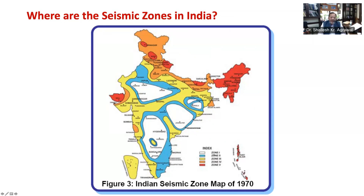If we need to relate them with the Modified Mercalli Intensity, the maximum MMI of seismic shaking expected in these zones is as follows: Zone 1 is five or less, Zone 2 is six, Zone 3 is seven, Zone 4 is eight, and Zone 5 will have a maximum Modified Mercalli Intensity of nine or more. Parts of the Himalayan boundary in the north, the northeastern region, and the Kutch area in the west were classified in seismic Zone 5.